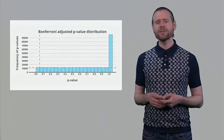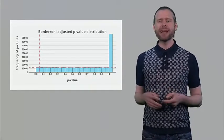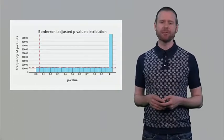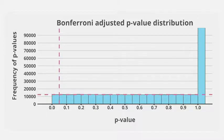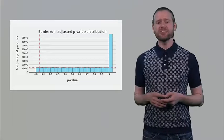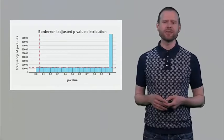If we apply the Bonferroni correction by multiplying p-values and plot the resulting distribution, we see a peculiar distribution. The alpha level is exactly controlled — the Type 1 error rate is at 5% of the total number of simulations. Due to multiplication of p-values, many become very high or actually 1, producing a large bar on the right side of the graph. But the number of times we say there is something when there is nothing is nicely controlled.